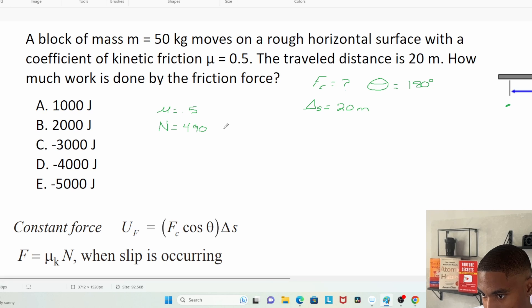So 490 newtons. It looks like we can get our force now, right? So force constant, F_c, is just 490 times 0.5. I get 245 and that's newtons.